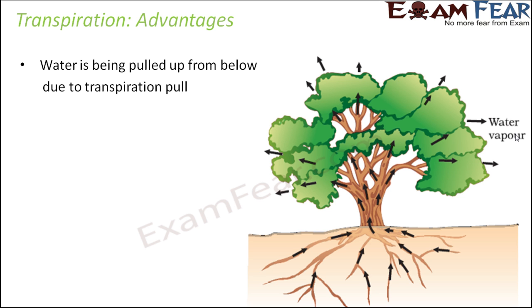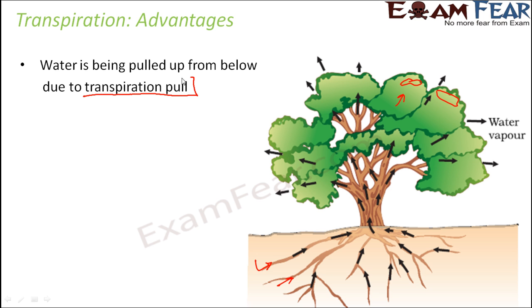There are many advantages of transpiration. First, water is pulled up from below due to transpiration. When water on the upper surface of the leaves moves out, a vacancy is created, and water from the inner parts of the leaves is pulled upward. This pull extends all the way down, allowing roots to take up water from the soil. This entire pull effect is called transpiration pull.